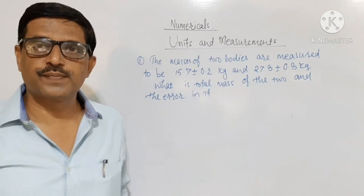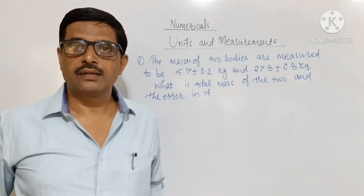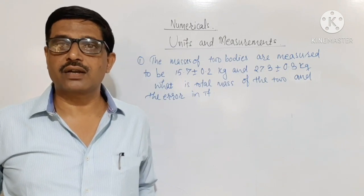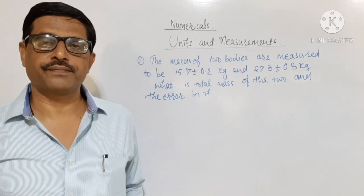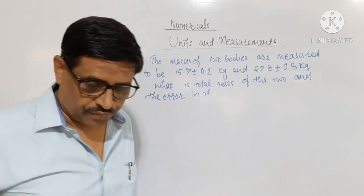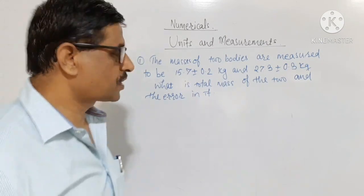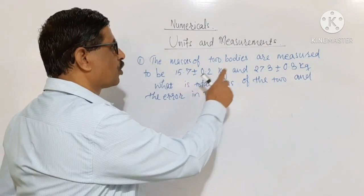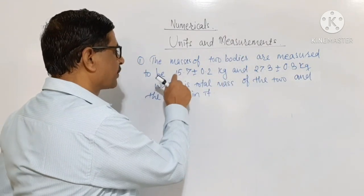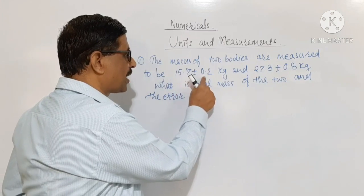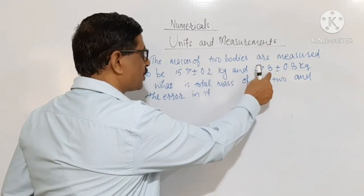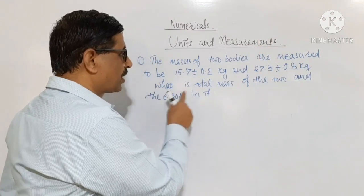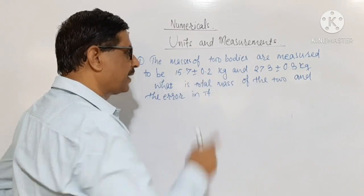The first numerical is based on error and the combination or propagation of error. The stem of the question: the masses of two bodies are measured to be 15.7 plus or minus 0.2 kilogram and 27.3 plus or minus 0.3 kilogram. What is the total mass of the two and the error in it?